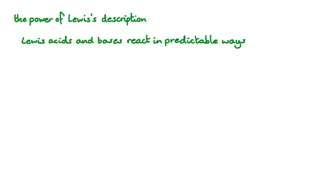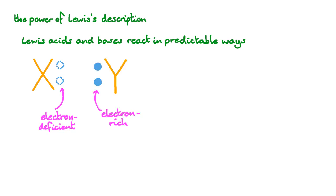The advantage of Lewis's description is this: Lewis acids and Lewis bases react in predictable ways. Since the set of Lewis acids and bases is bigger than the others, Lewis's description allows us to easily compare a greater number of chemical reactions. There's nothing wrong with a Bronsted-Lowry description — it's just more specific than Lewis's. If we see an area of one molecule that's electron deficient and another area that's electron rich with a reactive lone pair, we can guess how they might interact, meaning that we can predict where bonds are likely to form.